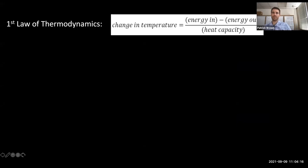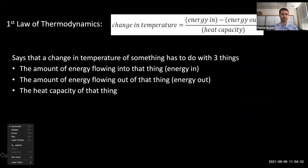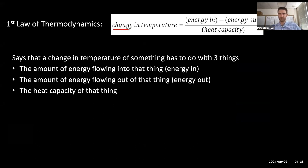Here it is in equation form. The first law of thermodynamics, written out in words, says that a change in temperature of something — and it's important to note that's a change, not just temperature equals — changing over some period of time equals the difference between the amount of energy flowing into that thing minus the amount of energy flowing out of that thing, divided by the heat capacity of that thing.